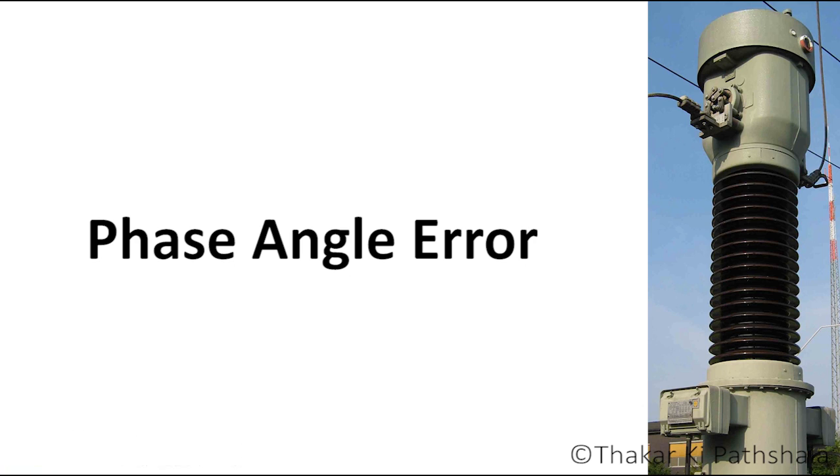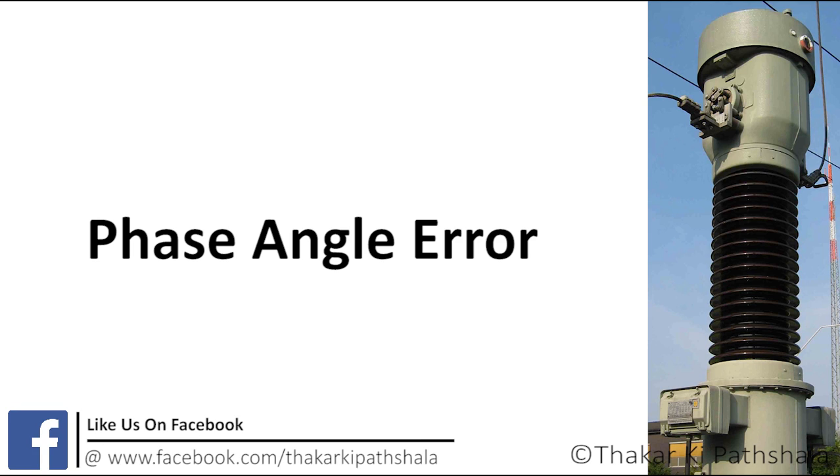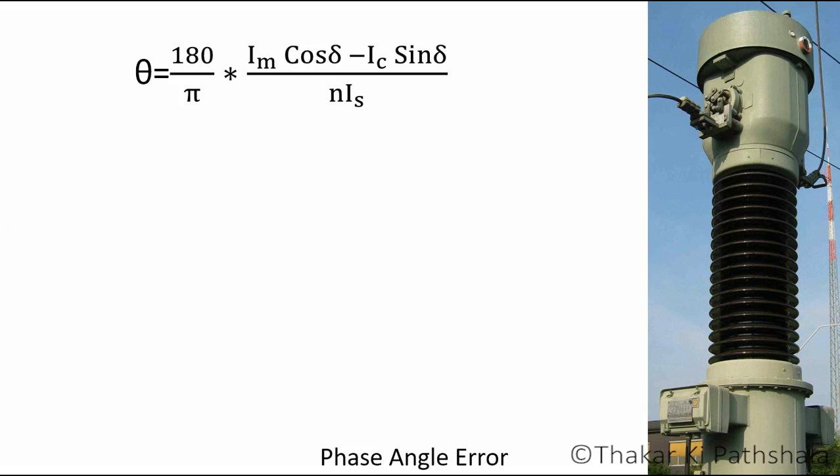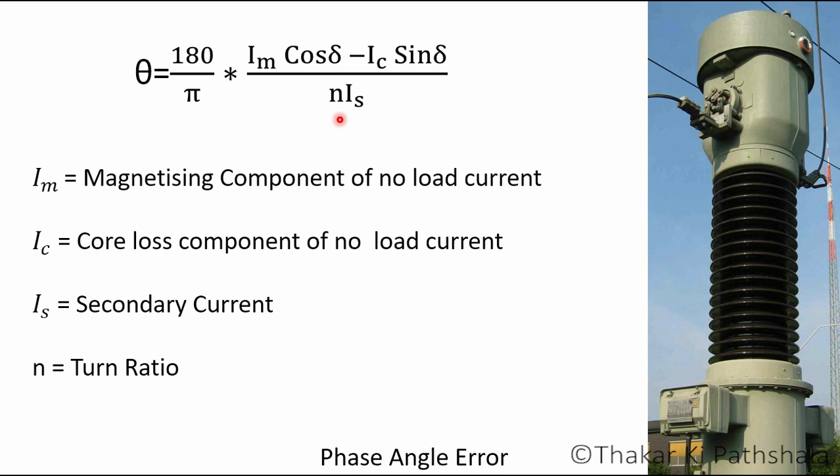So error occurs in measurement, which is called as phase angle error or phase error in current transformer, and it is denoted by theta. Equation to find this error is like this: theta is equal to 180 upon pi times Im cos delta minus Ic sine delta divided by N into Is. Here Im is magnetizing component of no load current, Ic is core loss component of no load current, Is is secondary side current. N is called as turn ratio for transformer.